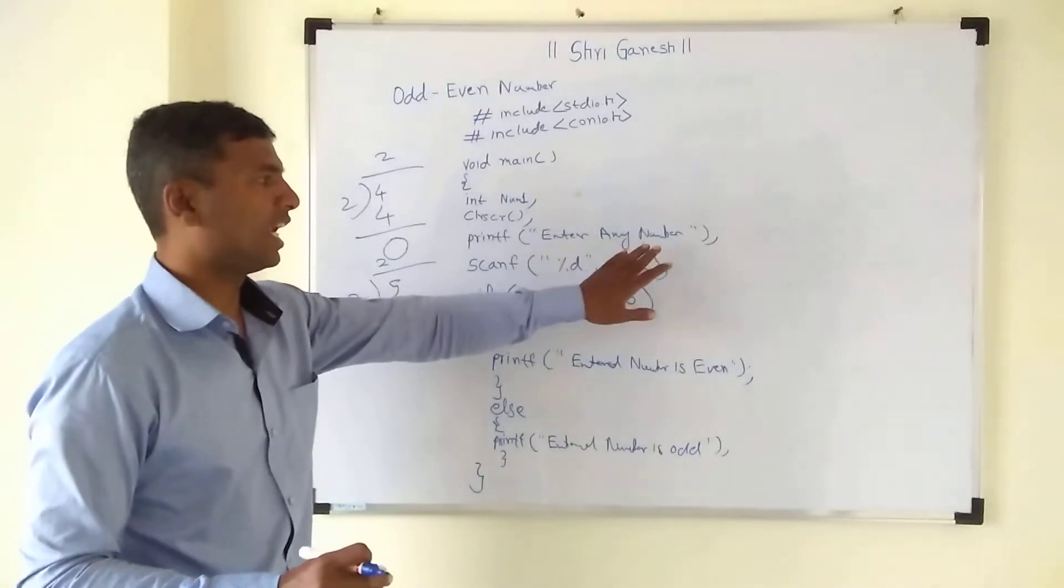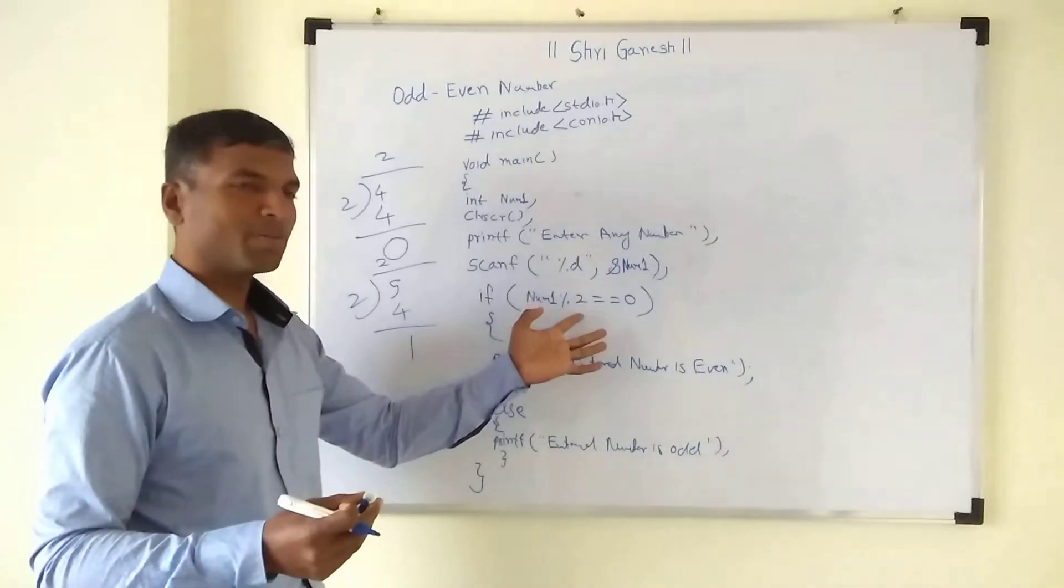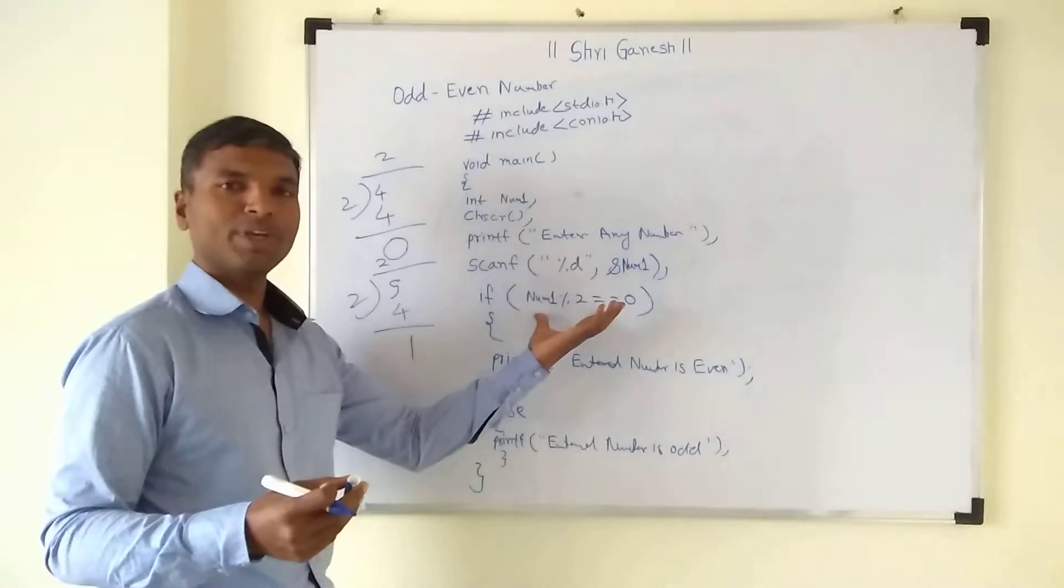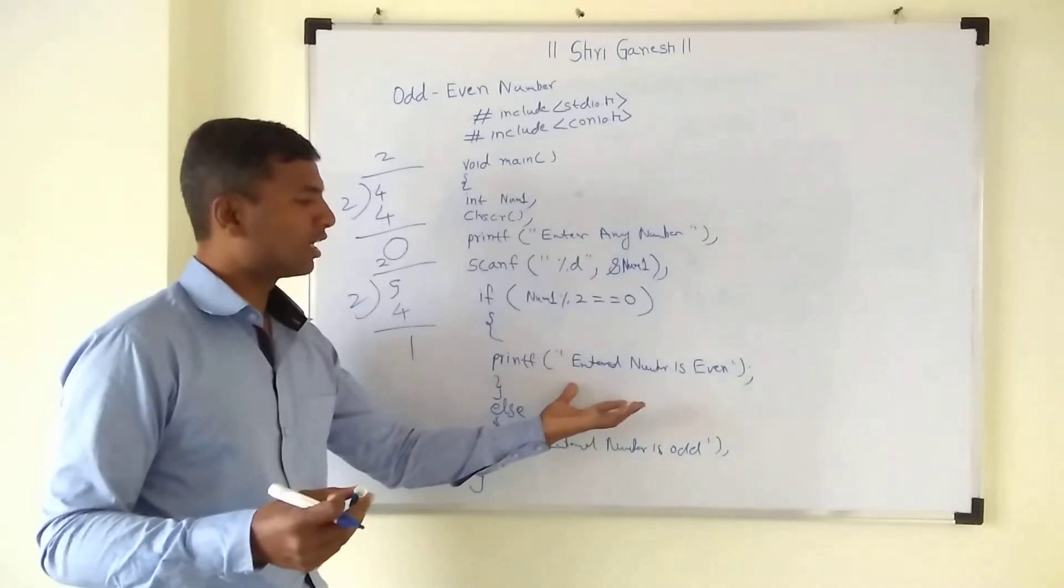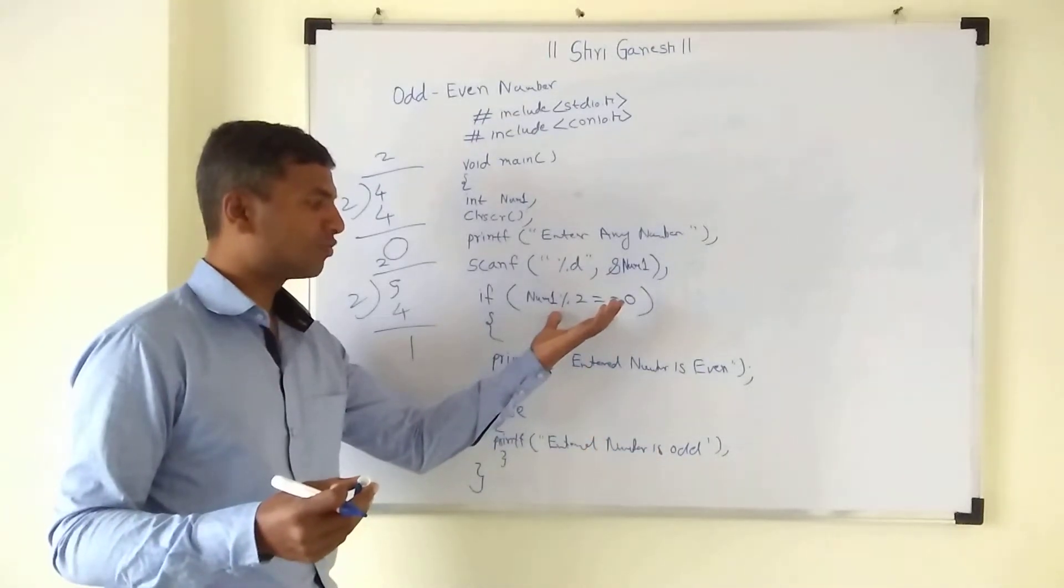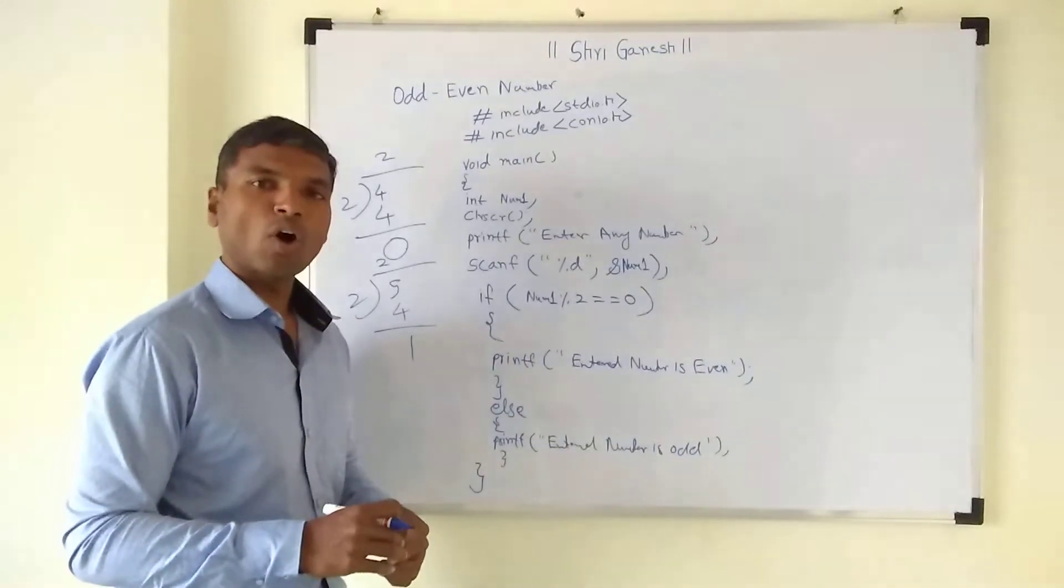It will ask you first: enter any number. Then you can enter the number. Then it will check whether it is perfectly divisible by 2. If it is perfectly divisible by 2, this condition will become true and they will print the entered number is even. If this condition is false, it will transfer the flow to else part and it will print the number is odd.